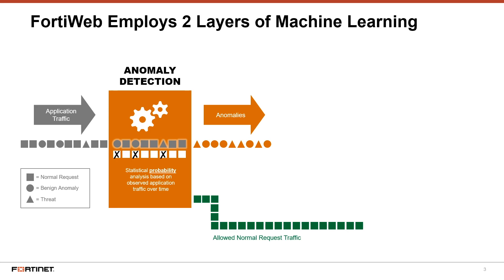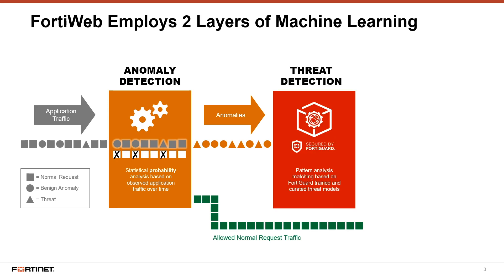Instead of blocking every single anomaly, they are sent to a second machine learning engine to accurately determine if they are a threat. The second layer evaluates the anomaly by running it through multiple highly trained threat models to determine whether it is an attack. These threat models are included as part of the FortiWeb solution, and each model represents a specific attack type, extensively trained and tested by the FortiWeb development team.